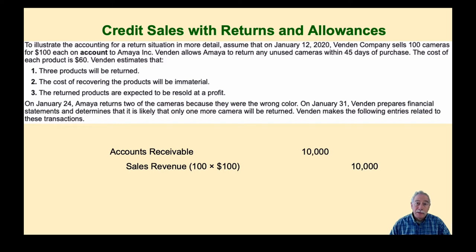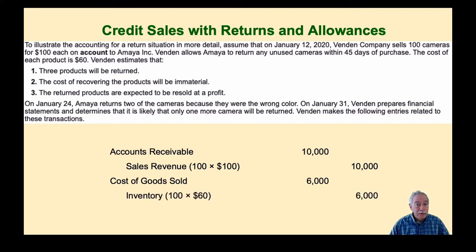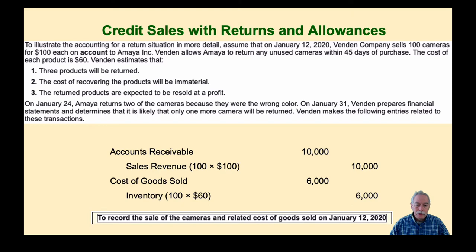Using the perpetual inventory system, we also record cost of goods sold and a reduction in inventory for 100 cameras at $60 each. This is a straightforward sale on account to record the sale of the cameras and related cost of goods sold on January 12th.